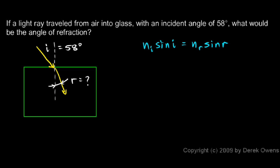And n_i and n_r are the indices of refraction. Now what are those? Well, n_i is the index of refraction for air because the incident ray is in air—that's 1.00. n_r is the index of refraction for the glass because the refracted ray is in the glass, and the index of refraction for glass is 1.52.